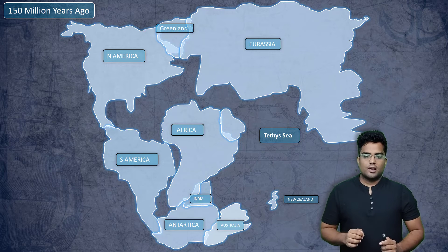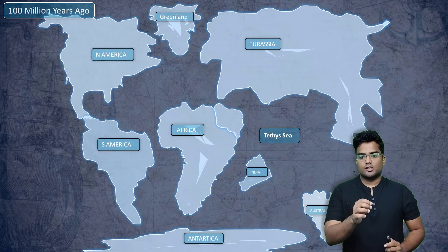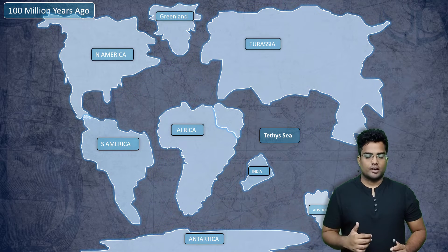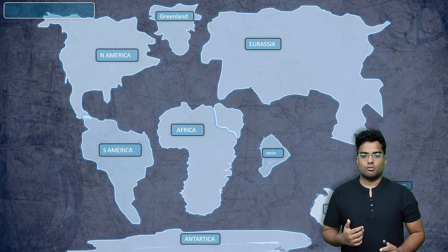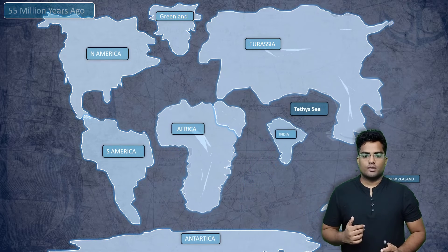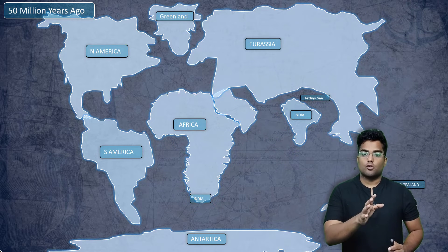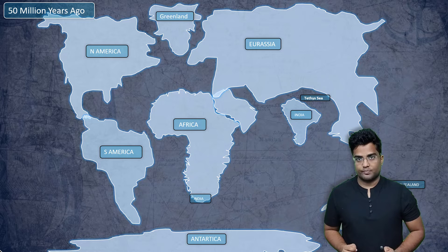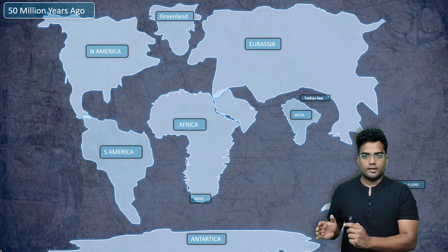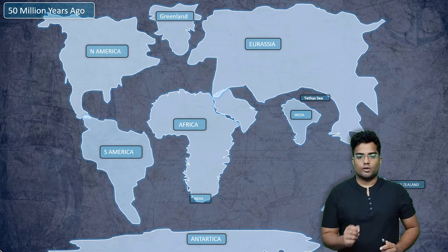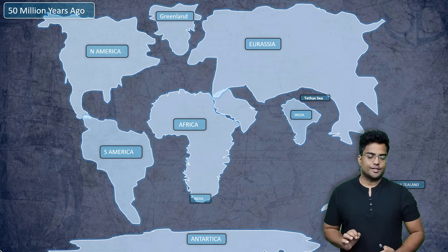India starts moving towards Eurasia around 100 million years ago. It slowly keeps on moving. So we have reached the part where India is almost going to collide with Eurasia. And after the collision, there is the formation of the Himalayas, which we have created a separate video about. Now at this point, we are only interested in the sedimentation of the Tethys Sea.